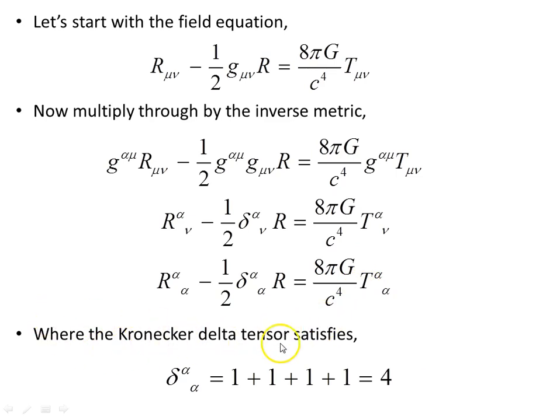Now the Kronecker delta tensor satisfies this object here, δ^α_α is 1 plus 1 plus 1 plus 1, is 4, because of the four dimensions of space-time.